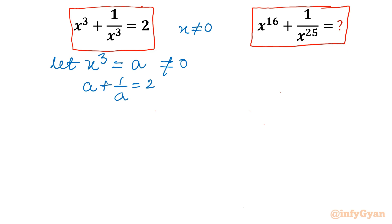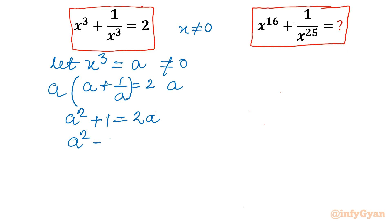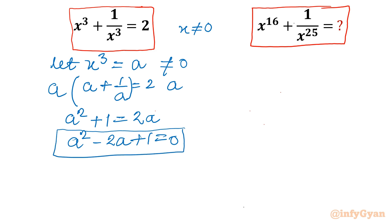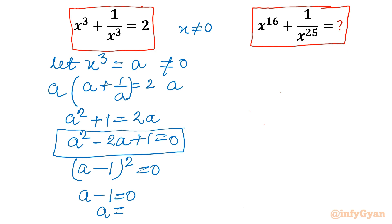Now I will take the LCM, or multiply both sides by a. This becomes a² + 1 = 2a. Taking all terms to one side: a² − 2a + 1 = 0. This is a quadratic equation and a perfect square identity — it is (a − 1)².